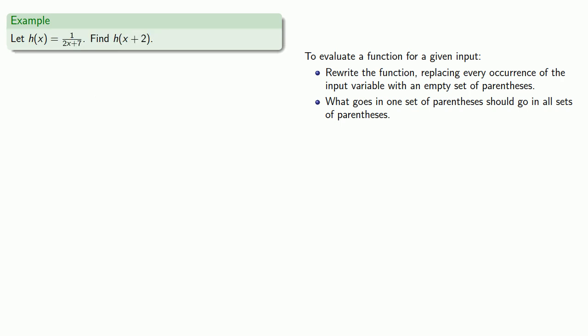The important thing to remember is that this is true regardless of what we want to put in that first set of parentheses. So here we have h of x is 1 over 2x plus 7. We want to find h of x plus 2. So we'll rewrite our function, leaving an empty set of parentheses any place we see an x.